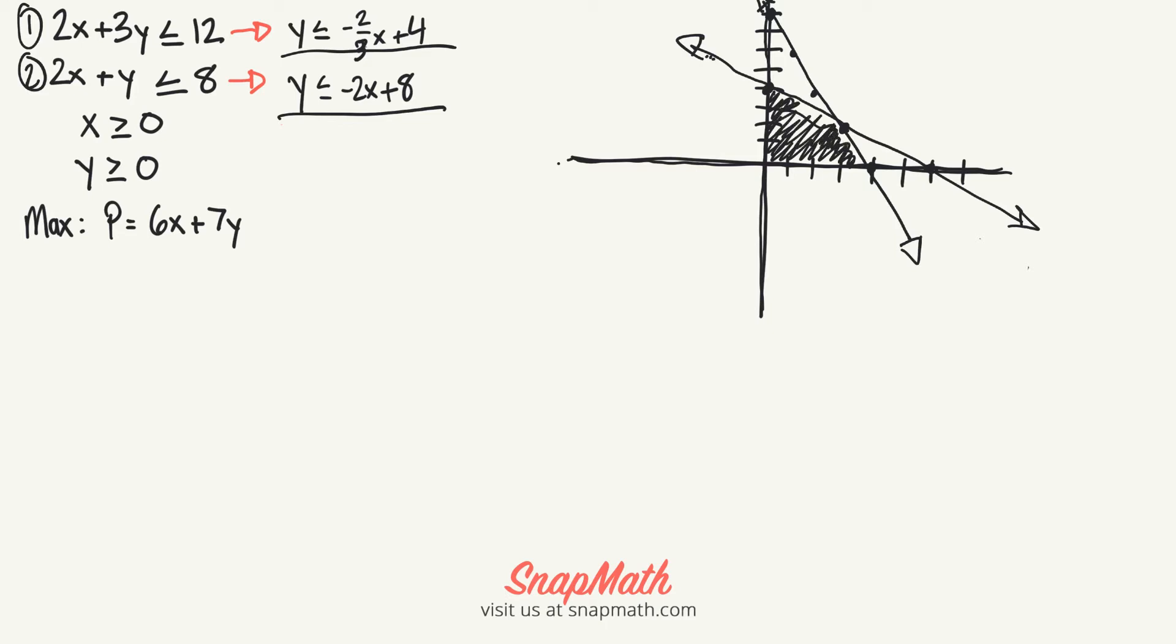Now we have to find our main points. Our main points are going to be (0,4), (3,2), (0,0), and (4,0), wherever these overlap.